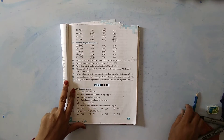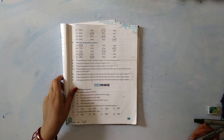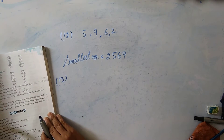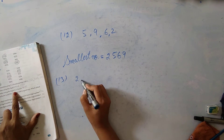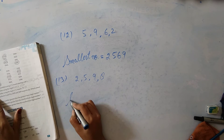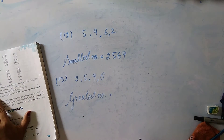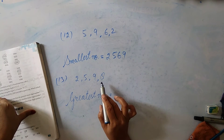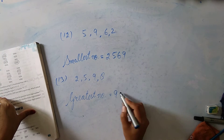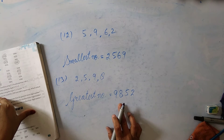Question number 13: Write the greatest number using the digits 2, 5, 9 and 8. To get the greatest number, we put the biggest digit first. The biggest digit is 9, then 8, then 5, then 2. So the greatest number is 9,852.